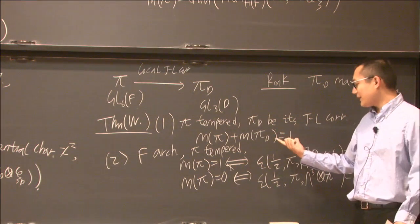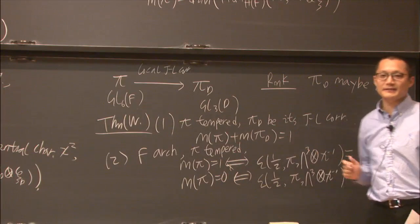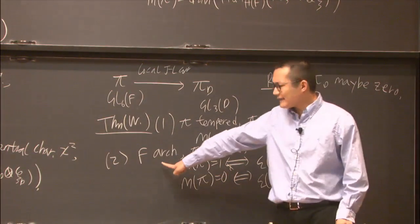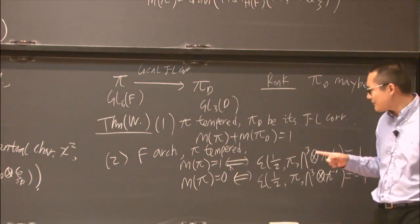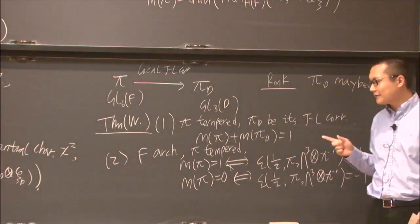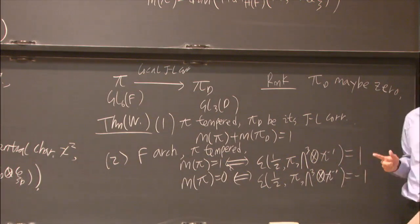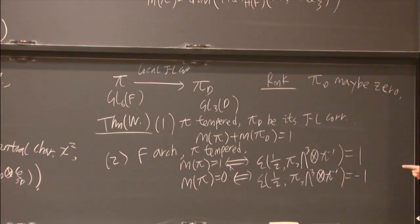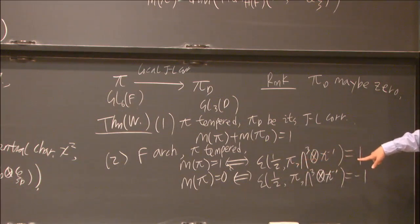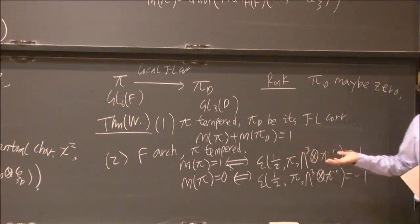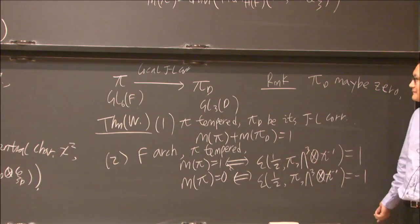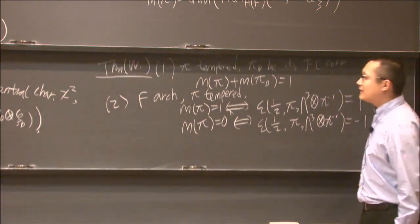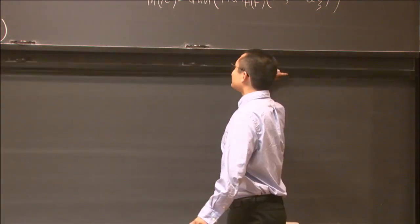For this, I only have some partial results. I'll say, at least when F is Archimedean, of course pi is still tempered, then we have m_pi = 1 if epsilon(1/2, pi, chi) = -1. So in other words, you know the summation is 1 and you know when m_pi is 1, when it's 0. For the p-adic case, I only have some partial results. In the p-adic case, I can only prove it when pi is not a discrete series or the parabolic induction of a discrete series of GL_4 × GL_2. The issue here is, in the p-adic case, it's hard to define this epsilon factor. So in my proof, I'm directly using the local Langlands correspondence to define this epsilon factor on the Galois side. But in general, this is very hard to deal with for the p-adic case. So this is the theorem for the Ginzburg-Rallis model case.